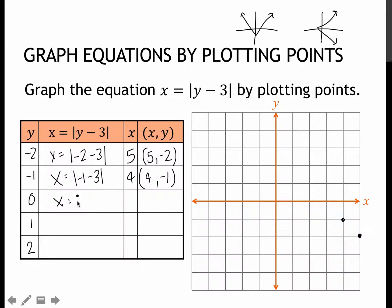Plugging in 0. 0 minus 3 is negative 3. The absolute value makes it positive 3. So 0, sorry, 3 comma 0, which is right here.